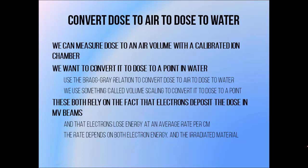In order to obtain a measurement of absolute dose with an ionisation chamber, we need to convert the measured dose to the air inside the chamber to dose to a point in water. We can obtain dose to air from measured ionisation chamber charge by multiplying the measured charge by the average energy required to produce that charge, and dividing it by the mass of air inside the chamber. The Bragg-Gray theory allows us to convert the measured dose to this air volume to dose to a volume of water instead, and we use something called volume scaling to convert dose to this volume to dose to a point.